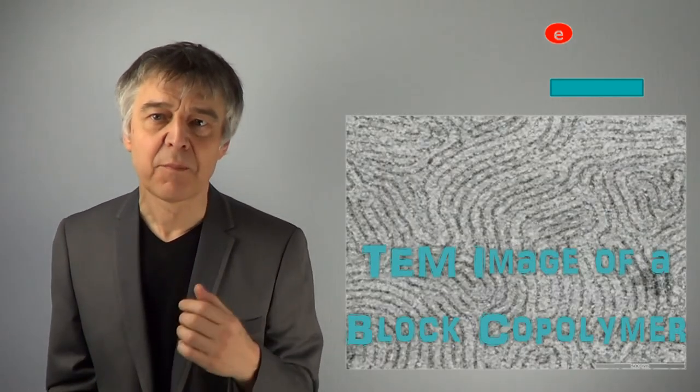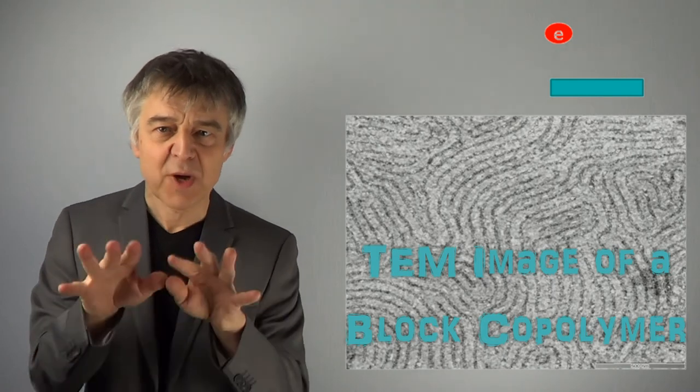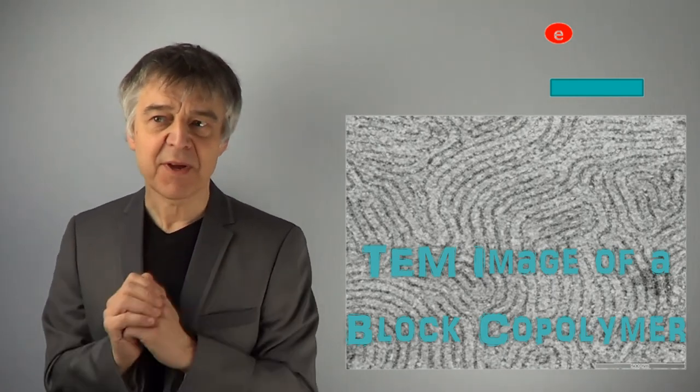Here another example. A transmission electron micrograph of a block copolymer in which the structure of the polymer segments becomes visible very clearly.